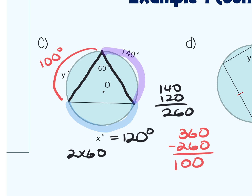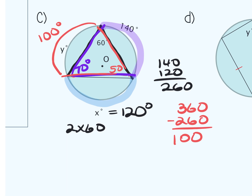Another way to find y: trace the angle forming the 140 arc — that angle would be half of 140, which is 70. Using the triangle angle sum, add 60 and 70 to get 130, subtract from 180, giving an angle of 50. Its intercepted arc would be two times 50, also 100. Mostly we were using the measure of an inscribed angle theorem.